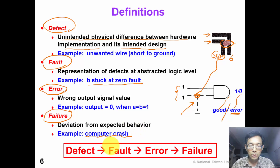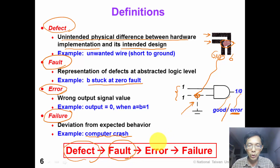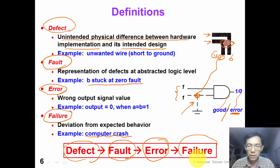In summary, a defect can be modeled as a fault, which can be manifested as an error, which will cause system failure.